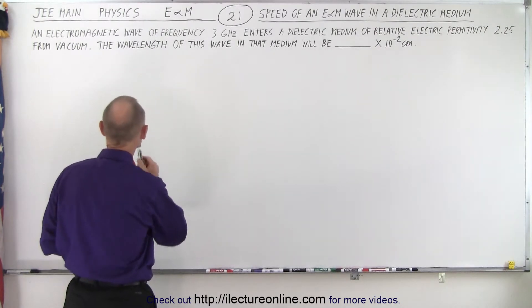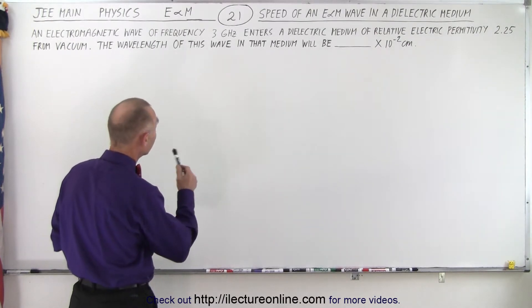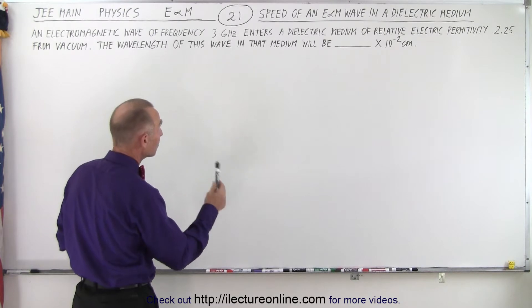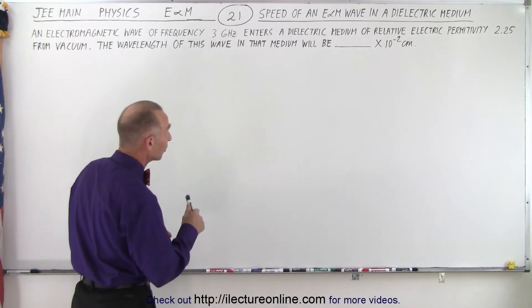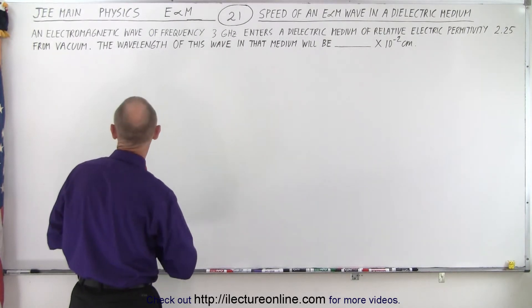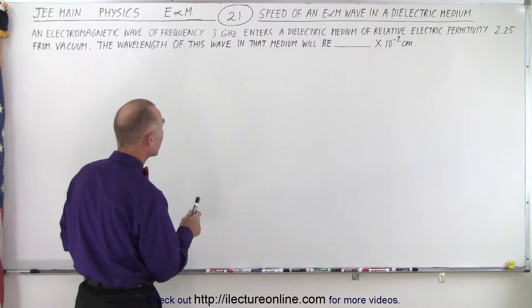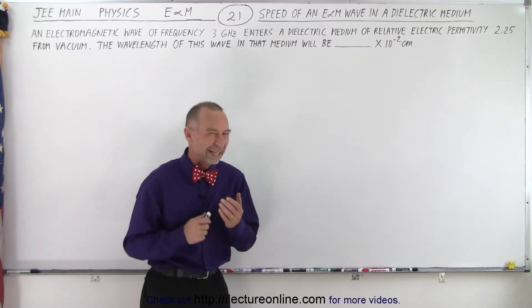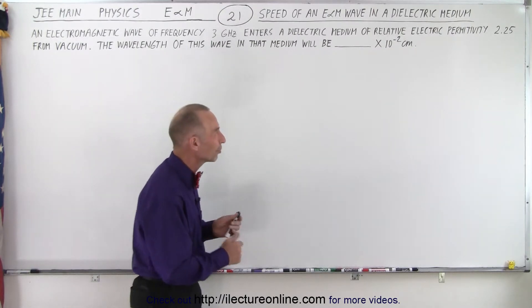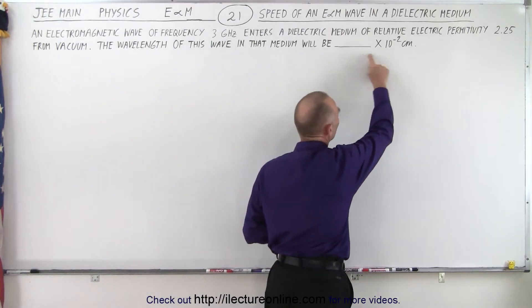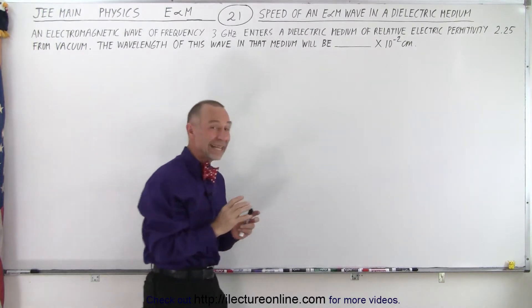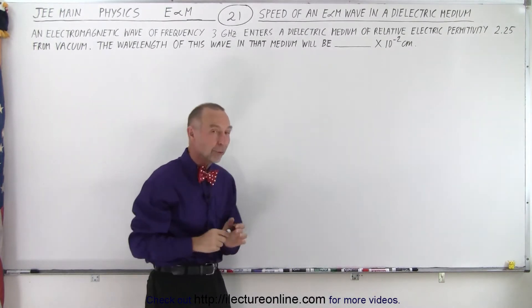It says an electromagnetic wave of frequency 3 gigahertz enters a dielectric medium of relative electric permittivity of 2.25 from vacuum. The wavelength of this wave in that medium will be, and we're looking for the answer in terms of 10 to the minus 2 centimeters. So this will require us to make some shift in the answer to make sure that it's in that format.